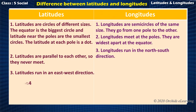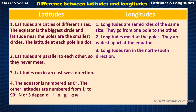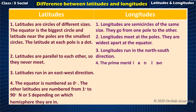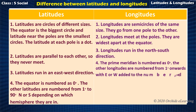Regarding numbering: the equator is numbered as 0 degrees, and the other latitudes are numbered from 1 degree to 90 degrees, with N or S depending on which hemisphere they are in. The prime meridian is numbered as 0 degrees, and the other longitudes are numbered from 1 degree onwards with E or W added to the number, depending on whether they are east or west of the prime meridian.